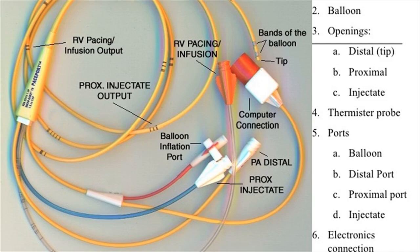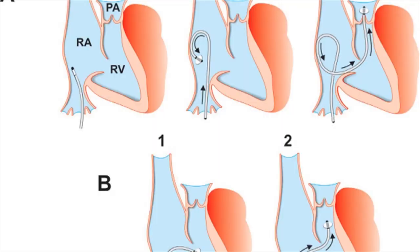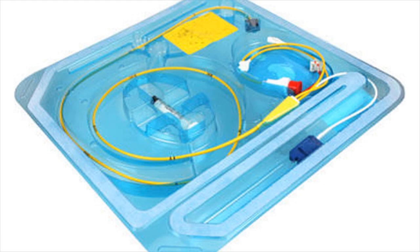A Swan-Ganz catheter is used for evaluating the hemodynamics of blood when it moves through your lungs and heart into your body. It is mostly used for checking the presence of any complication in your kidneys, lungs, or heart. Additionally, this procedure evaluates the following conditions as well.